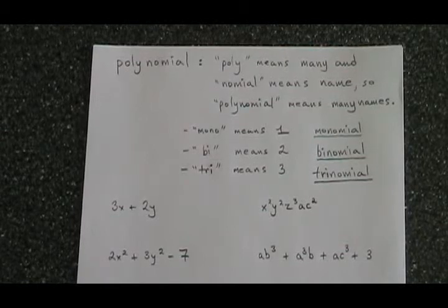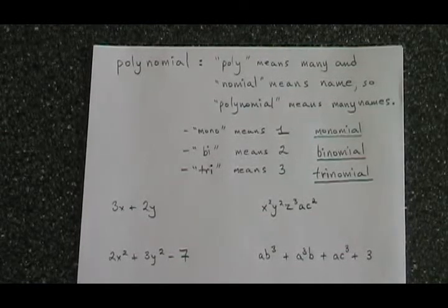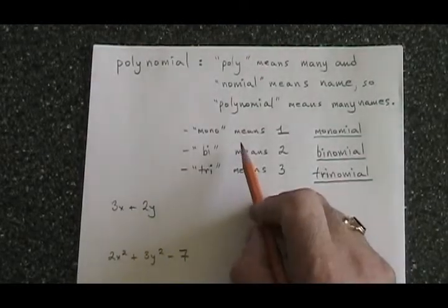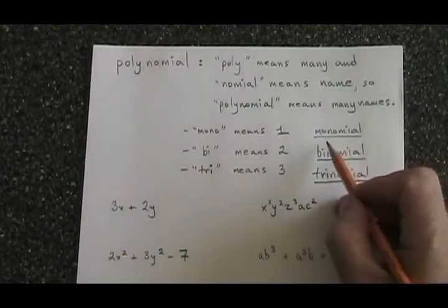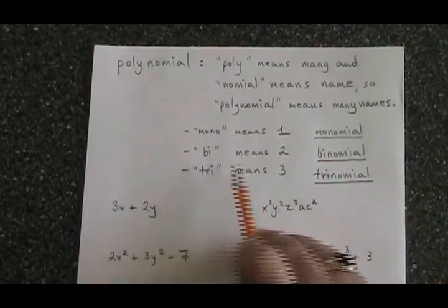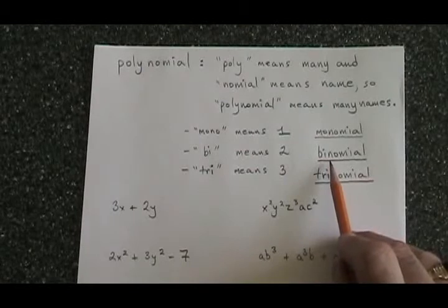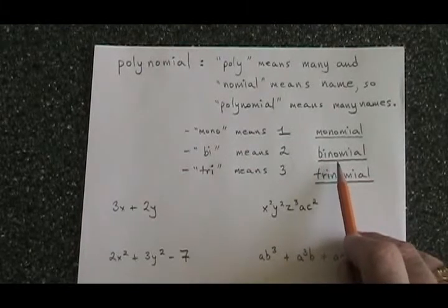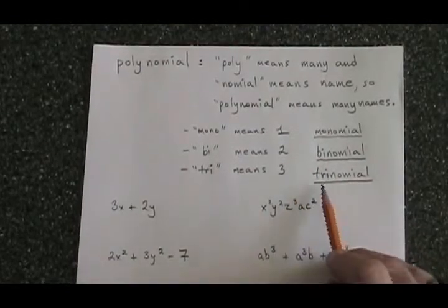We also have to know the meanings of the words mono, bi, and tri. Mono means one, as in monocle, so the word monomial must mean one name. Binomial, therefore, must mean two names, and trinomial must mean three names.